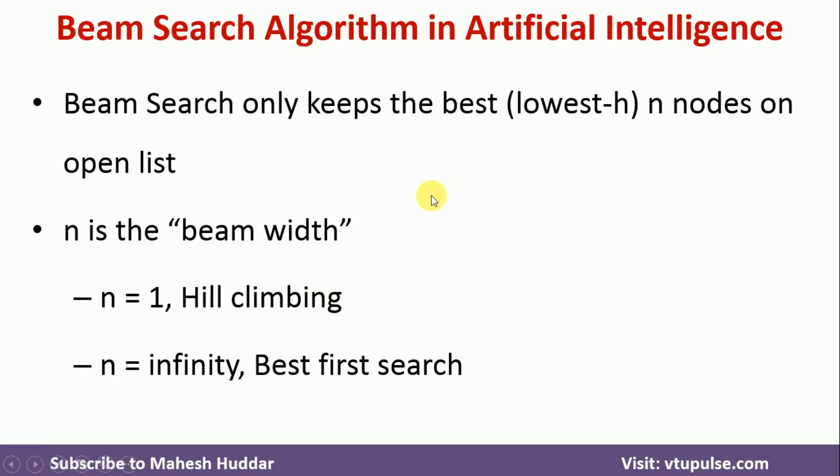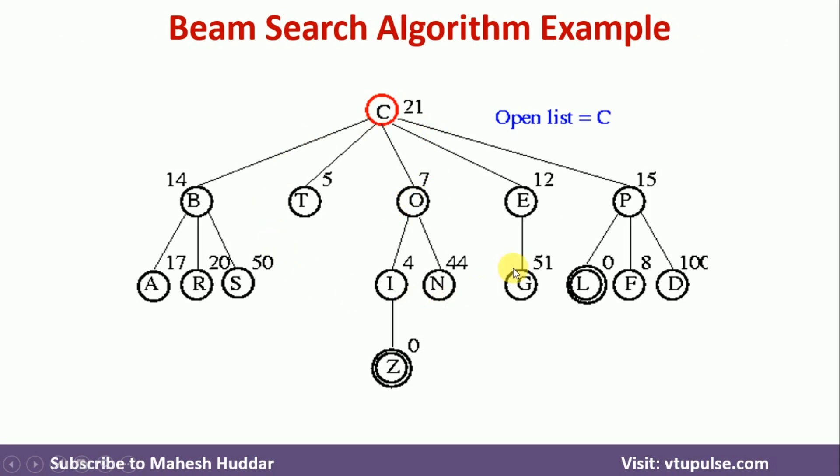I will take a very simple example to understand this algorithm. Let us say that this is the graph given to us, where C is the source node, L and Z are the goal nodes in this case. And the value of N is equal to 2 here, that is I want to put maximum two nodes into open list here.